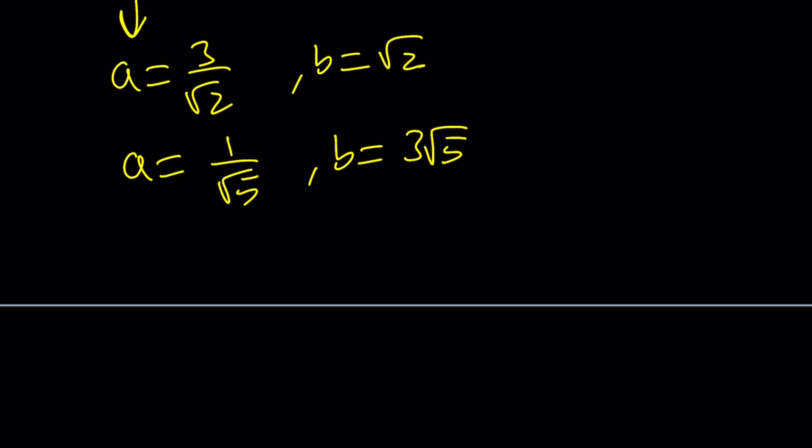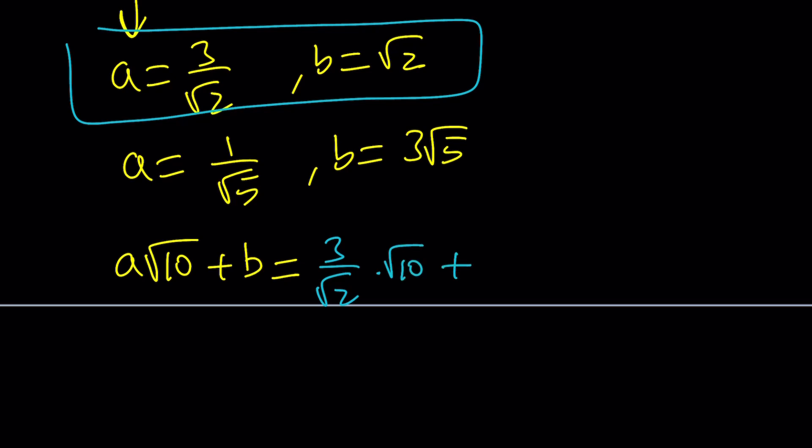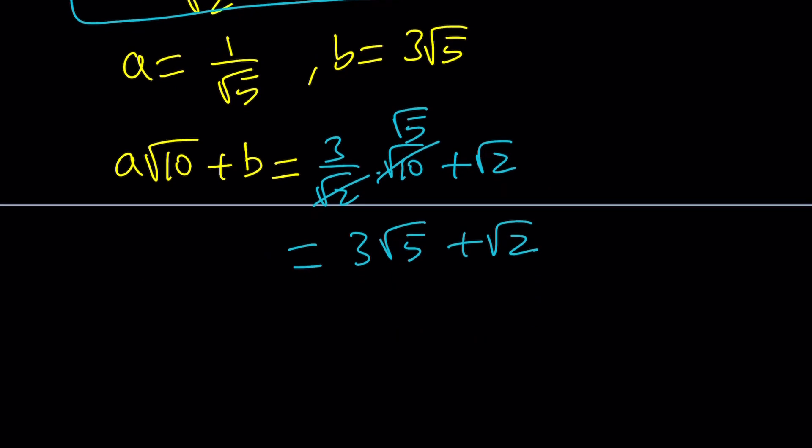Since our expression, the answer was in this form, I'm going to go ahead and plug in the first set. And that's going to give me 3 over √2 times √10 plus b, which is √2. Now, √10 and √2 cancels out, leaving us at √5. And this becomes 3√5 plus √2. That's one of the solutions.